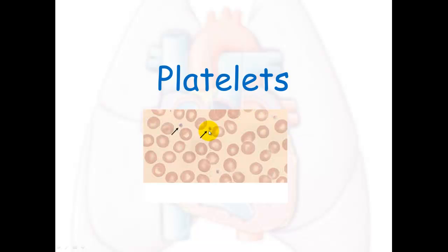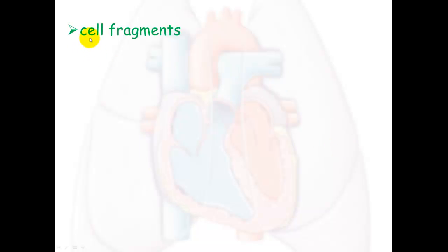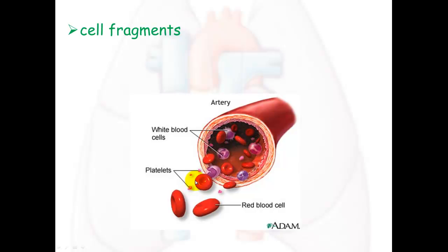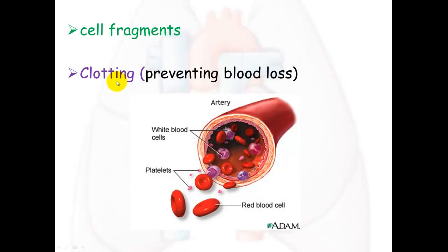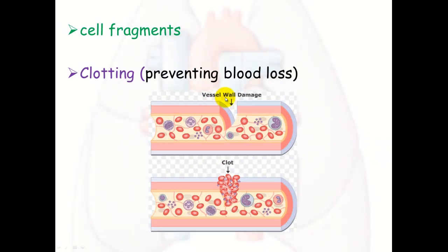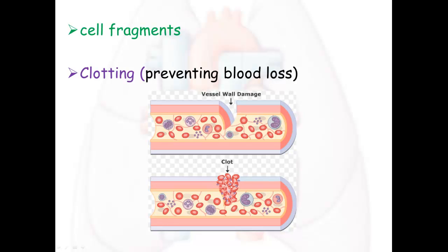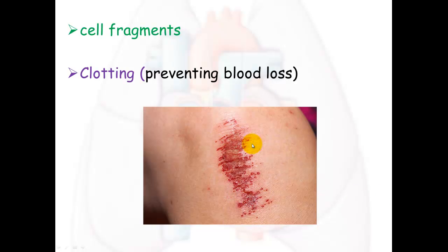Platelets are crucial in our blood even though they only make up 0.01 percent. They are cell fragments — pieces of other cells — and they're tiny in comparison to other blood cells. They are essential in clotting, which prevents blood loss. When a blood vessel is damaged, platelets congregate at the site and trap the red blood cells to stop blood from flowing out, forming what's called a clot. This is what forms a scab when you scratch or cut yourself.